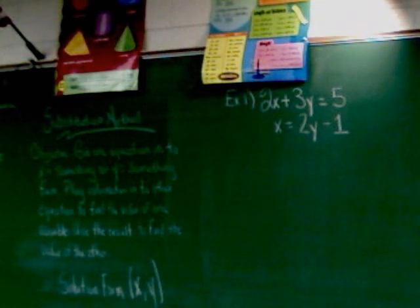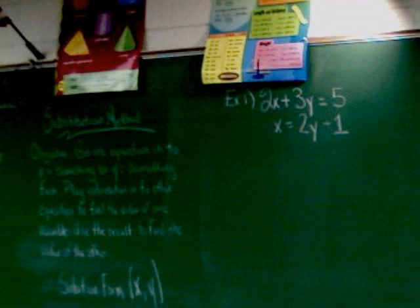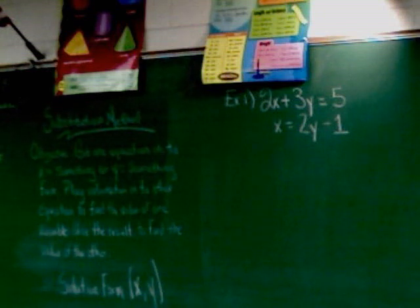The objective: you're going to get one equation into x equals something or y equals something form. So you want one of the equations that you're given to say x equals and then your string of things or y equals and then your string of things. You're going to take that information and put it into the other equation. That's why it's called substitution. To find the value of one variable, use the result to find the value of the other.